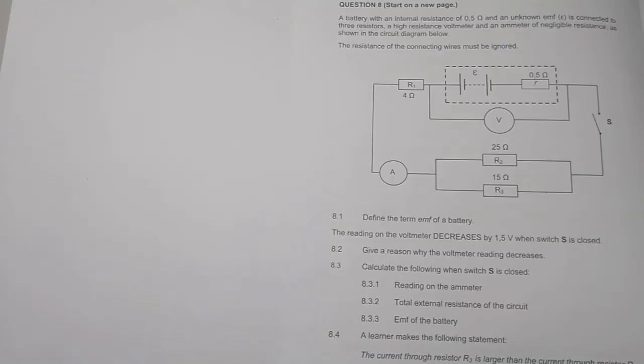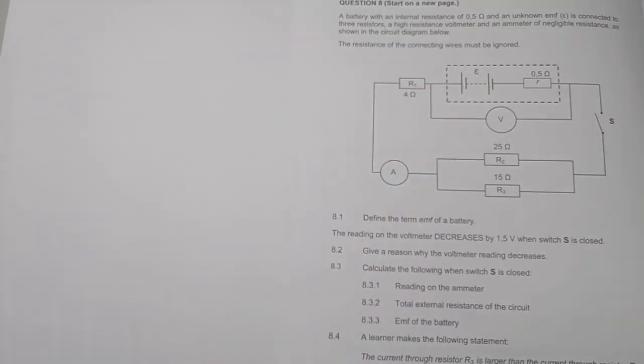It says a battery with an internal resistance of 0.5 ohms and an unknown emf is connected to three resistors, a high resistance voltmeter, and an ammeter of negligible resistance as shown in the diagram below.